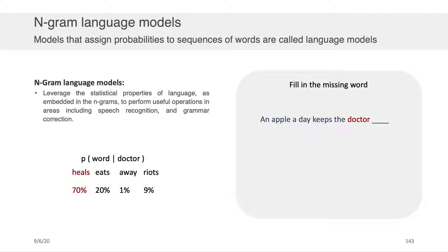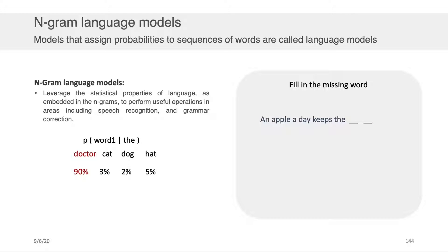Let's consider another example. Let's say we wanted to fill in the missing word in: 'An apple a day keeps the doctor blank.' Now, instead of this being a skip-gram problem, this is just a straight n-gram problem. I can have a training corpus, look at where the word 'doctor' showed up, see what words came after it, and get a probability for whether the next word is 'heals,' 'eats,' 'aways,' or 'riots.' Let's say 'heals' had the highest probability — I could put that in there.